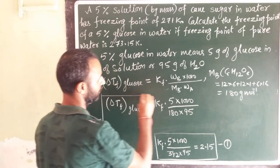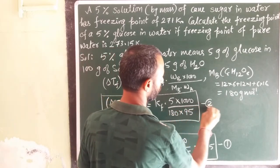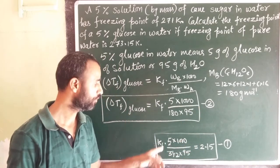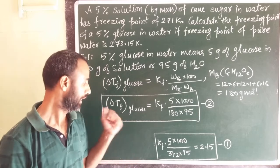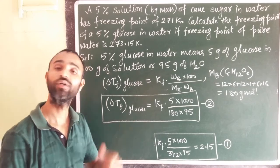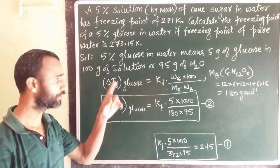This is equation number 2. This is equation number 1, this is equation number 2. From these two equations, we have to calculate first delta Tf, then Tf of glucose. Just note down, then we will proceed further.